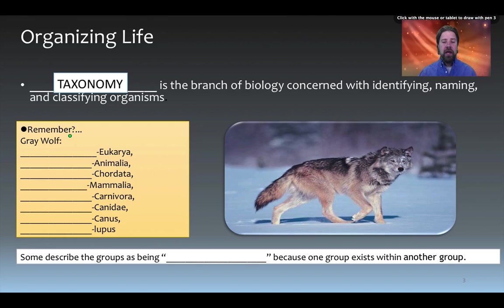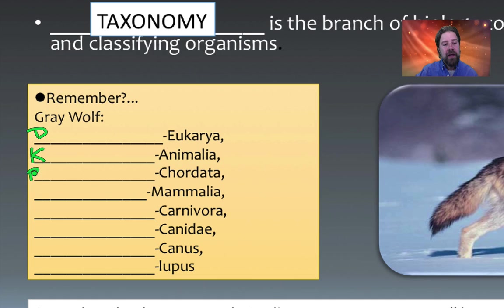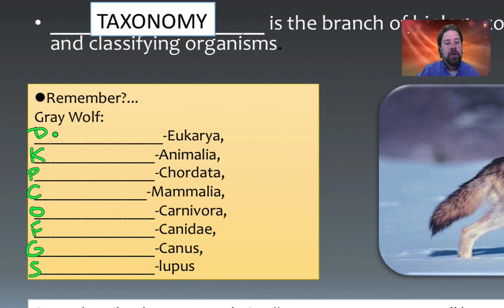We have a gray wolf and we're going to go through the various levels of taxa. To remember the names from top to bottom, I use the mnemonic: 'Dumb kids playing chess on freeways get squished.' That helps me hit all the levels — Domain, Kingdom, Phylum, Class, Order, Family, Genus, Species.